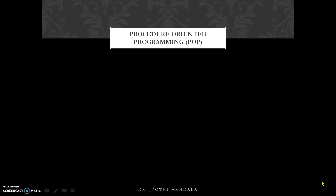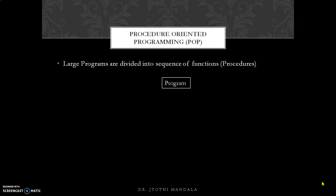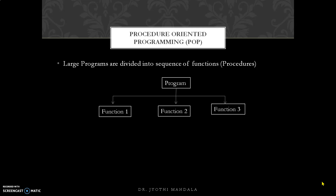In Procedure-Oriented Programming Language, a large program is divided into a sequence of functions. A function can also be called as a procedure. Suppose you are given a problem with a program consisting of thousands of lines — you would need to write all those lines in one function. If any problem occurs in one statement, you need to traverse all thousand lines to find where the error occurred. To solve this, we divide the program into functions — for example, function 1, function 2, function 3, and a main function.